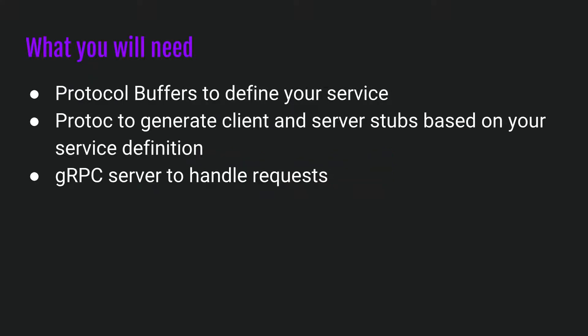So let's get started and figure out how all this fits together. First, you're going to need protobufs to define your service. You then need a tool called protoc to generate client and server stubs based on that service definition. With protocol buffers you essentially write what the API should look like, and based on that definition, protoc generates libraries for pretty much any language you want — PHP, Ruby, JavaScript — all of that in just a few seconds. Once you generate those client stubs, you then need a gRPC server to handle those requests.